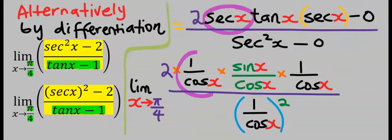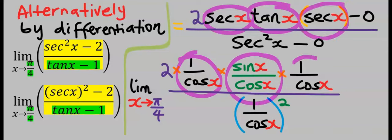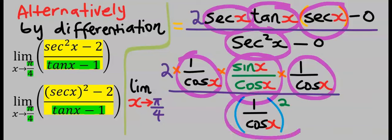Sec x is the same thing as 1 over cos x, and tan x is the same thing as sin x over cos x. Sec x is 1 over cos x, and sec squared x is the same thing as 1 over cos x all squared.